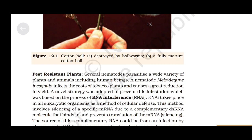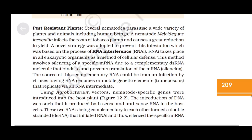RNAi takes place in all eukaryotic organisms as a method of cellular defense. This method involves silencing of a specific mRNA due to a complementary double-stranded RNA molecule that binds to and prevents translation of the mRNA. The source of this complementary RNA could be from infection by viruses having RNA genomes, or mobile genetic elements (transposons) that replicate via an RNA intermediate. Using Agrobacterium vectors, nematode-specific genes were introduced into the host plant, producing both sense and antisense RNA in the host cells.